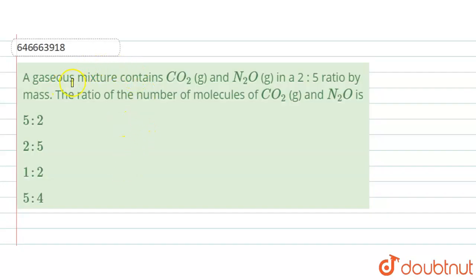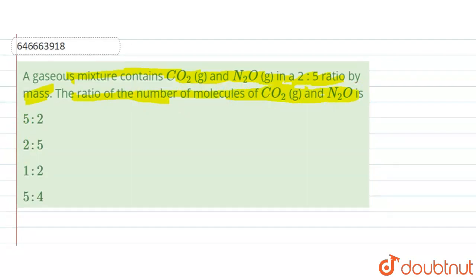So here the question is: a gaseous mixture contains CO2 and N2O in a 2:5 ratio by mass. The ratio of the number of molecules of CO2 and N2O is? So here we are given the ratio.